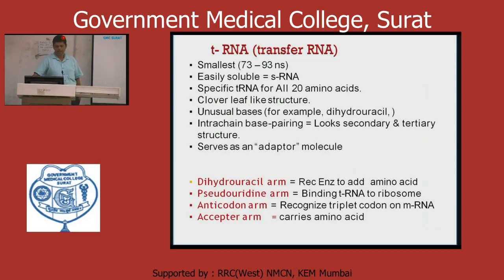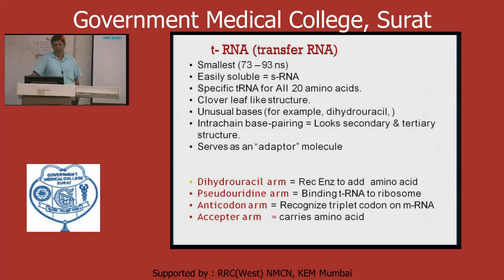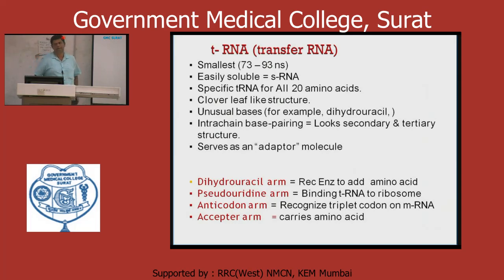The tRNA has various arms: the dihydrouracil (D) arm recognizes the enzyme to add the amino acid; the pseudouridine (TψC) arm binds tRNA to the ribosome; the anticodon arm recognizes the triplet codon on the mRNA so that according to mRNA codons, the tRNA brings the particular amino acid. The acceptor arm (CCA, 3' end) carries the amino acid.